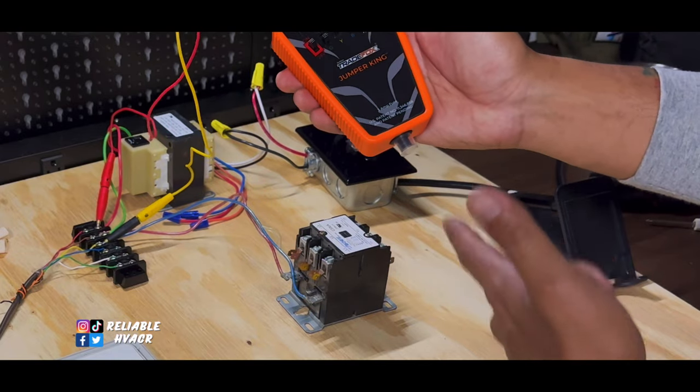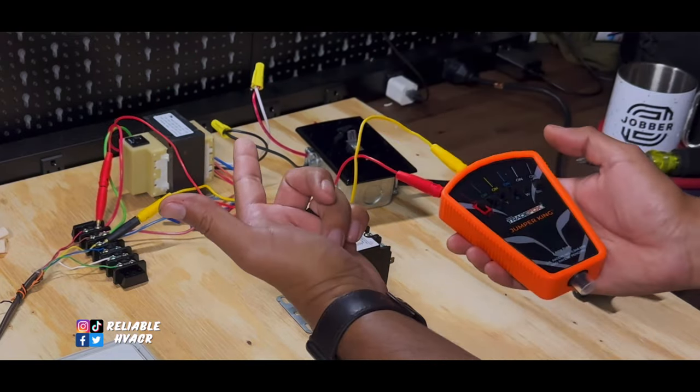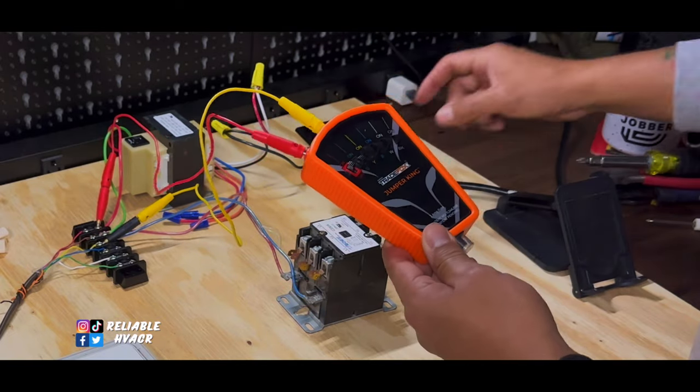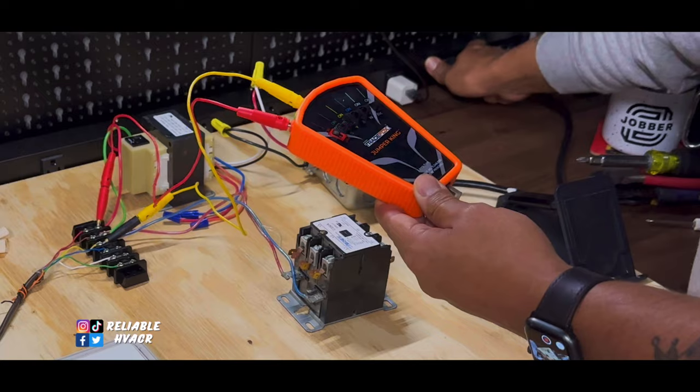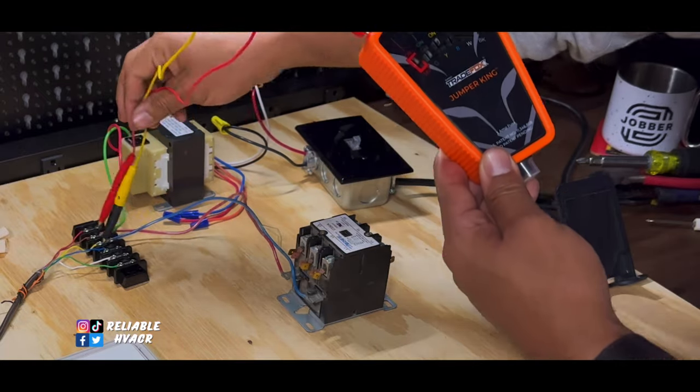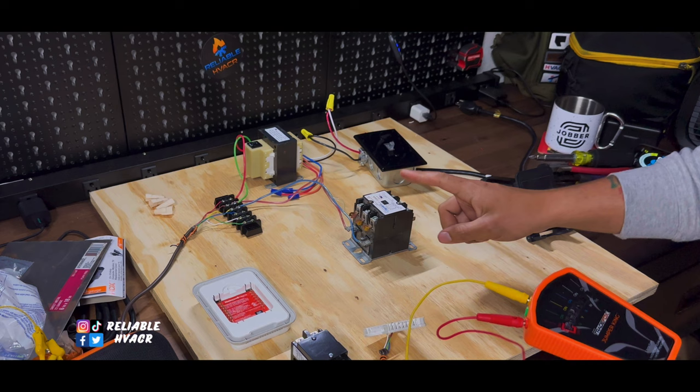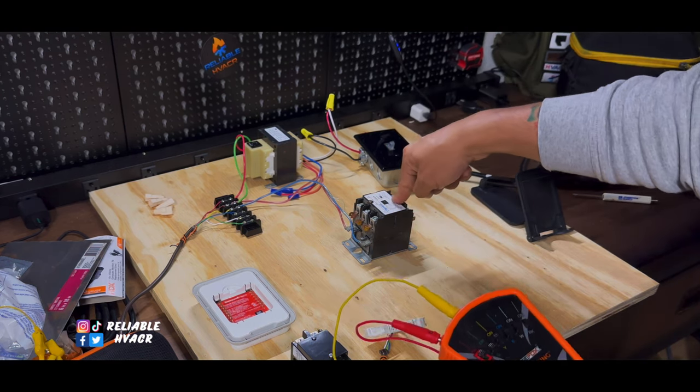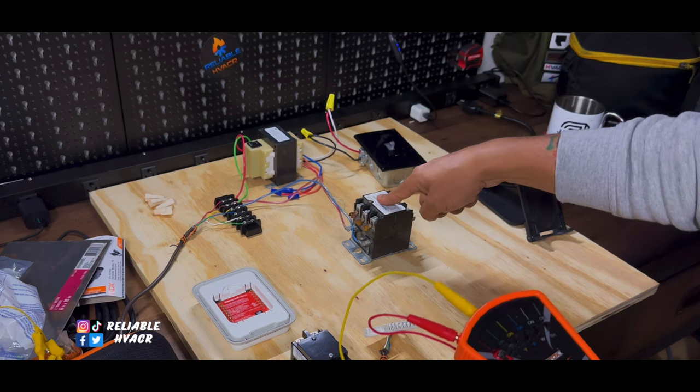Now, the Jumper King tripped. So, this tripped before the transformer, because I'm directly hooked on. So, if you have an issue like this, when I went to this unit, there were, there's going to be three contactors. There's going to be one for each compressor. It was a two-stage, and there's going to be one for the blower motor.